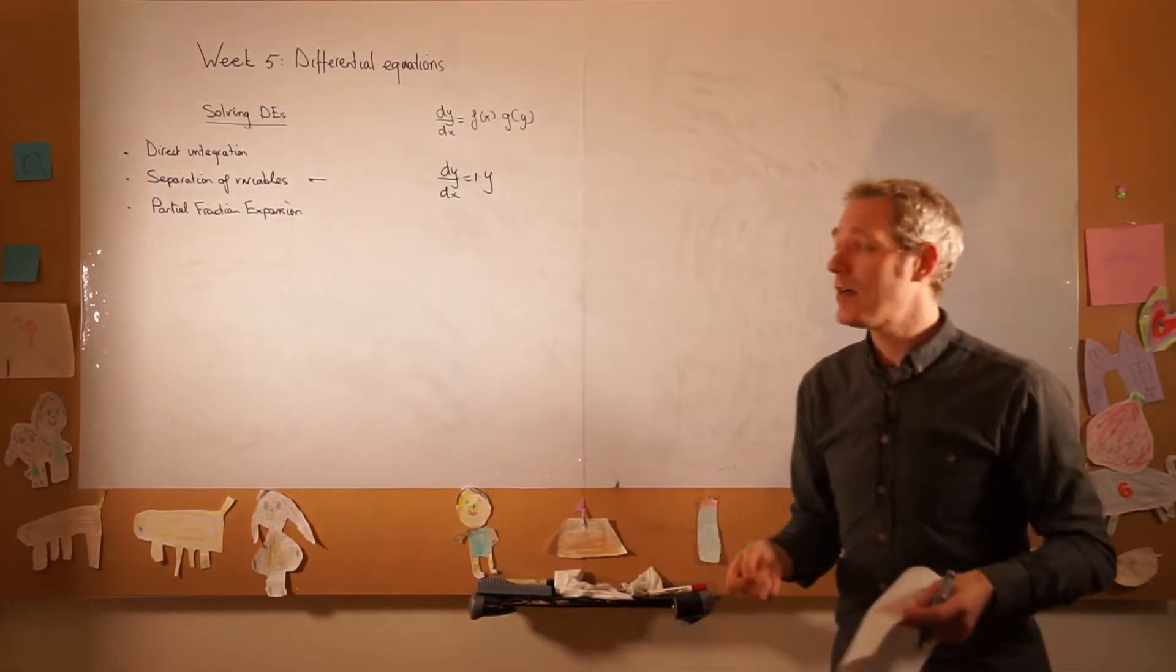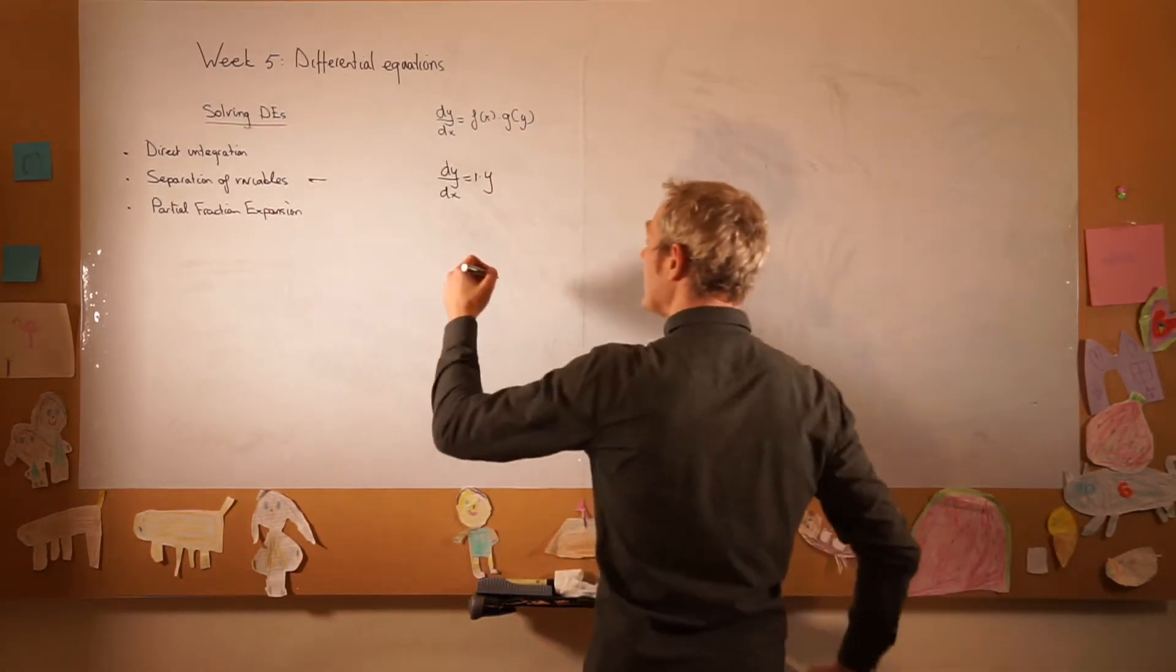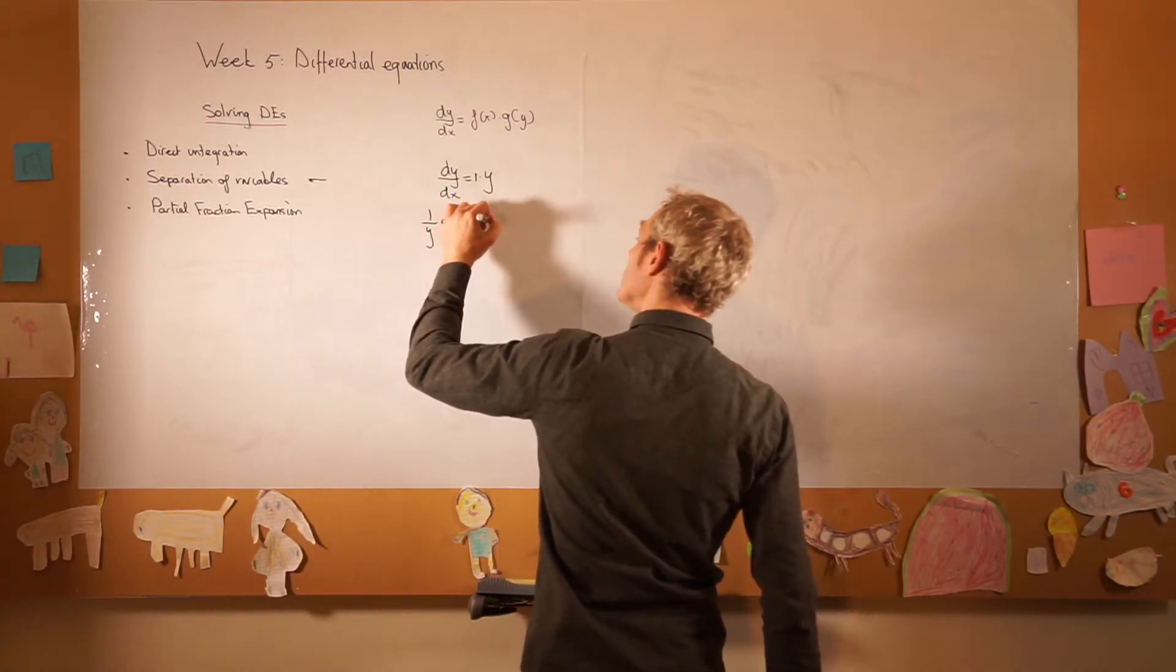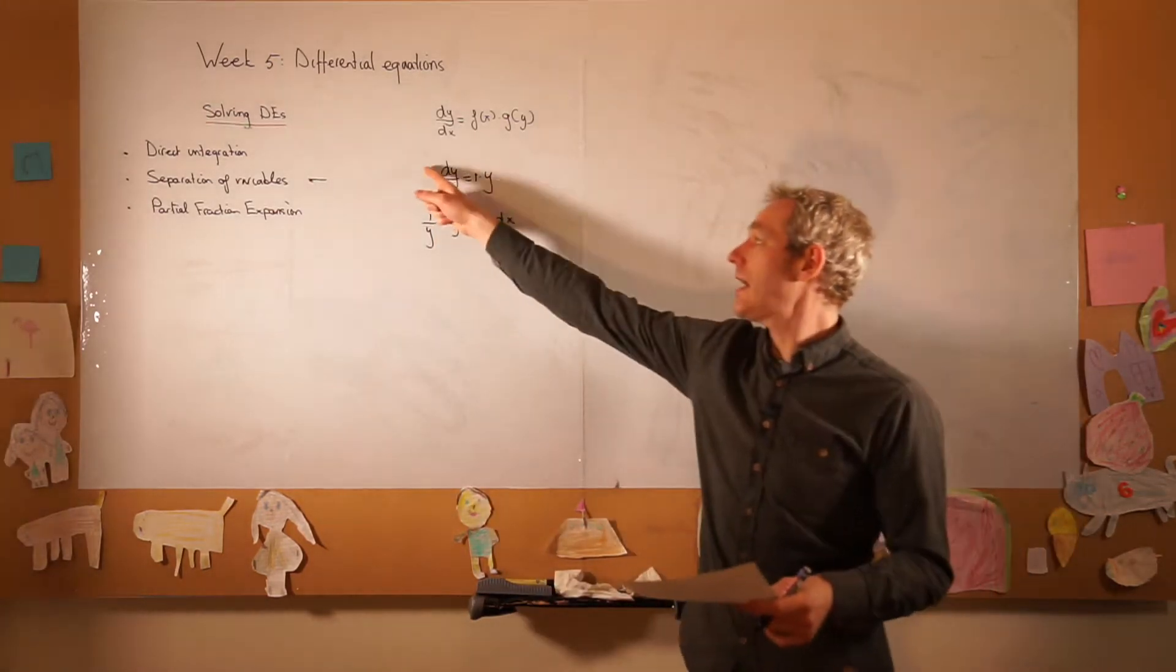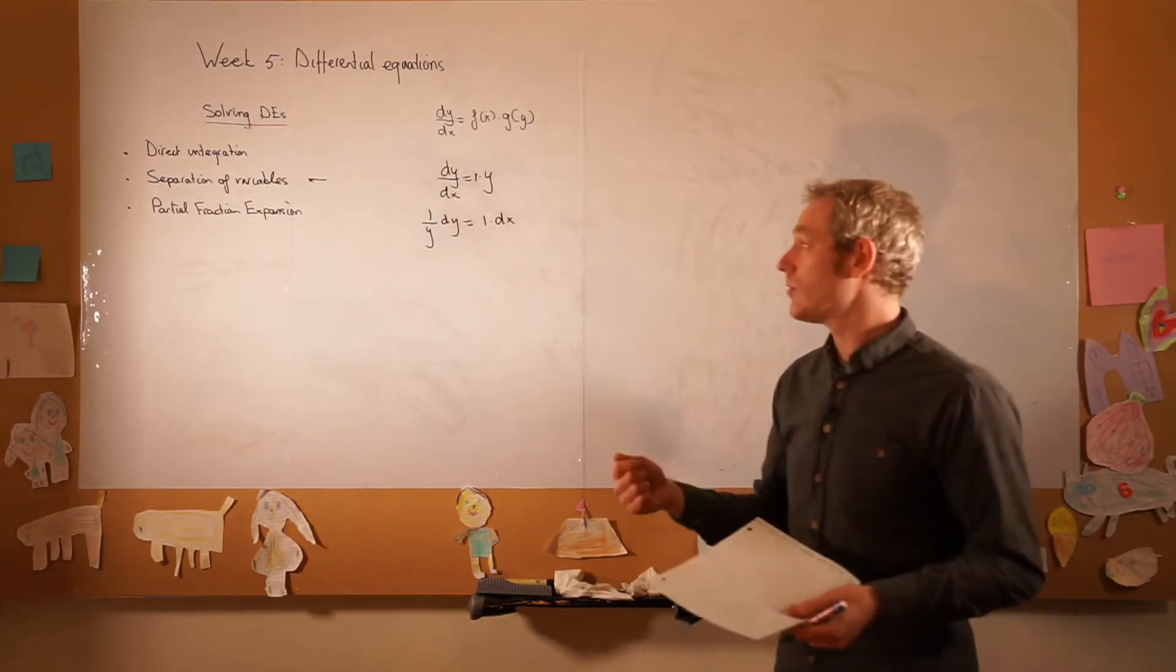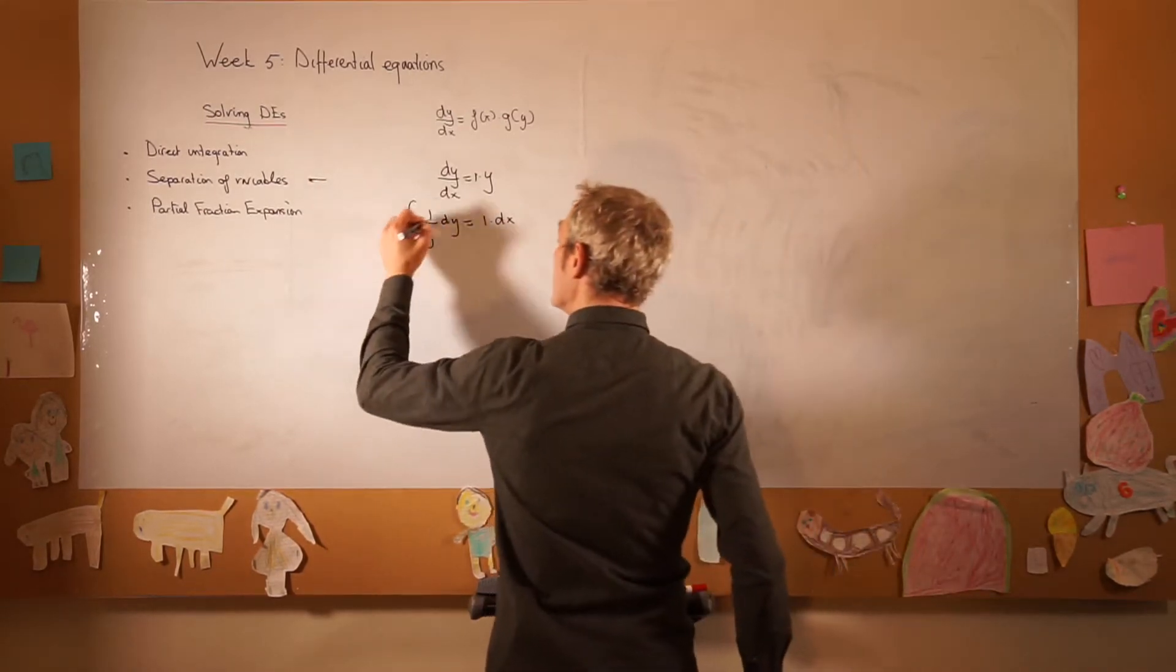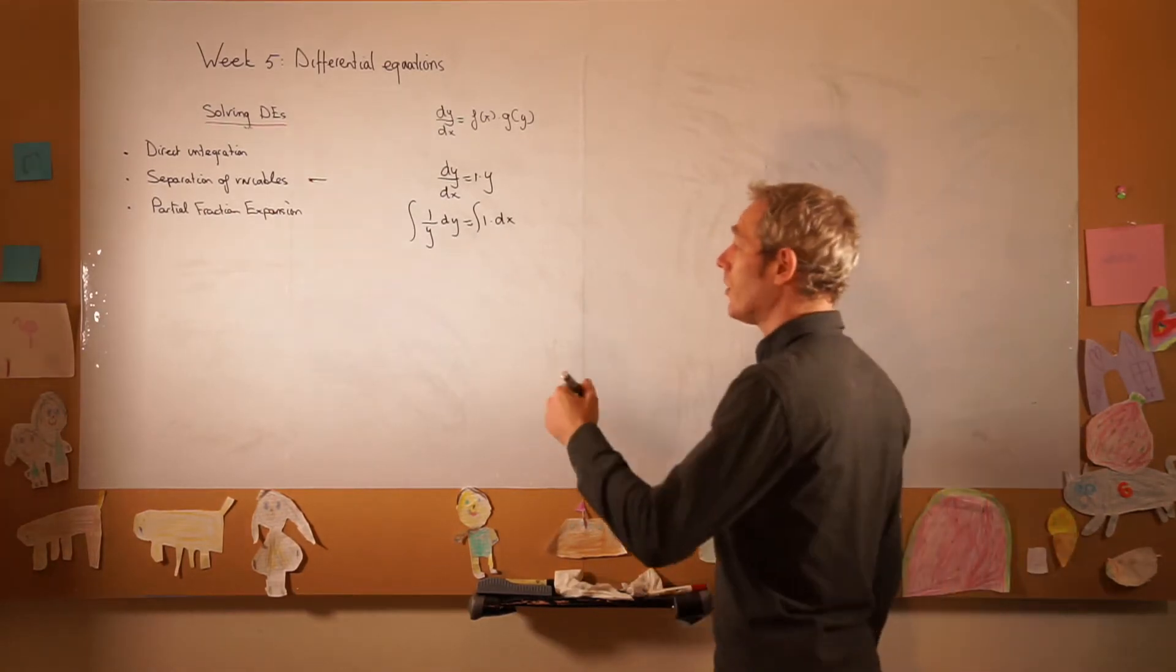Separation of variables: everything with y we move left, and everything with x we move right. So we get 1 over y dy, and this dx travels to the right-hand side. Yes, we can separate this out because we can use substitution rule to separate these out. The next step is simply write an integral in front of the part we have separated, and to solve them.